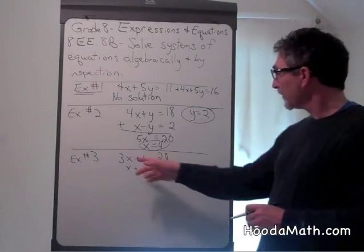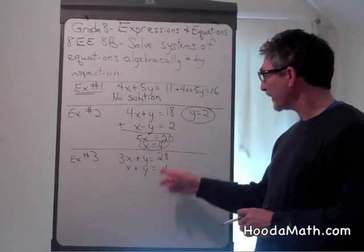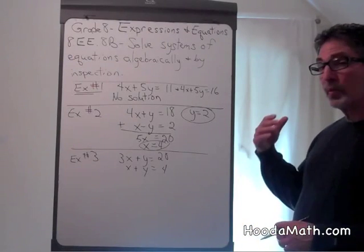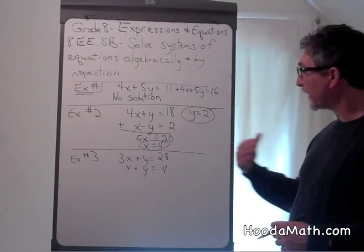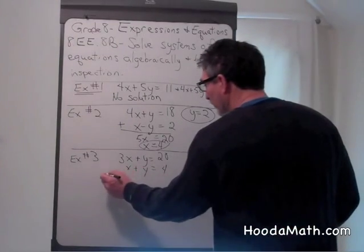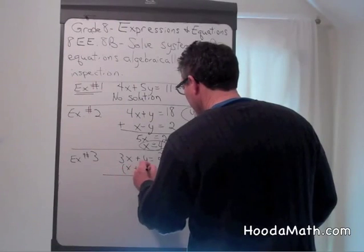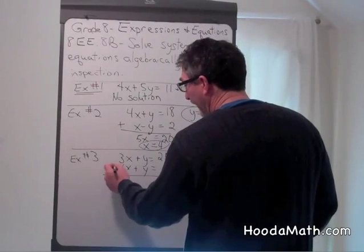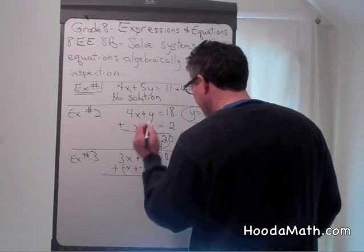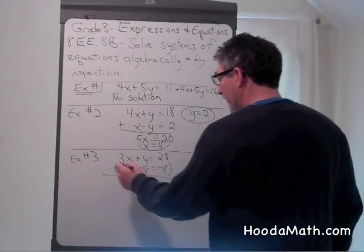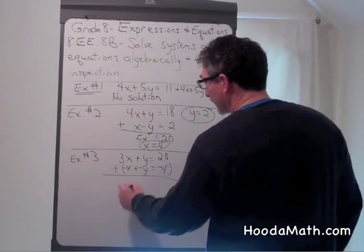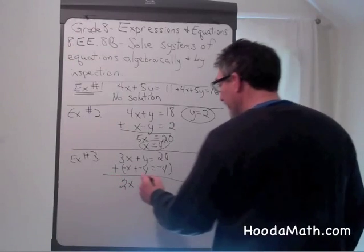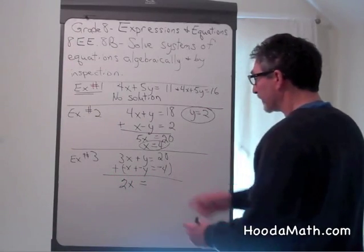Let's look at example 3. 3x plus y equals 20 and x plus y equals 4. In this case, we can eliminate one of the variables by subtracting. So we're going to subtract all of these numbers. So we could say we're adding the opposite. So 3x plus the opposite of x gives you 2x. And y plus the opposite of y gives you 0. And 20 plus negative 4 gives you 16.